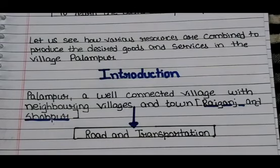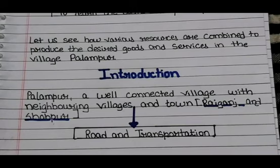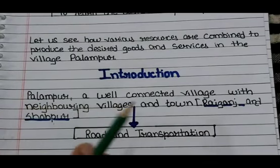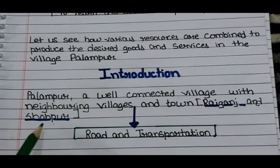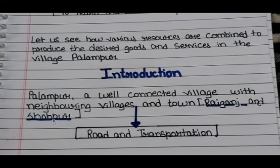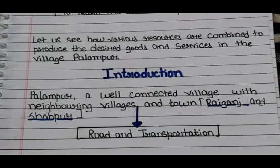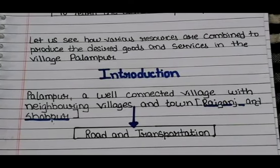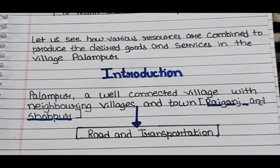What is an all-weather road? Generally, villages have kacche roads which were used only during certain seasons. When it rained, those roads became out of service and couldn't facilitate transport well because they were not permanent. But Palampur is connected to its neighboring villages and towns — Raiganj and Shahpur — through all-weather roads, meaning in any season, people of Palampur can easily go to buy or sell goods.